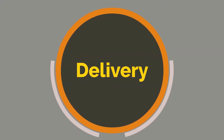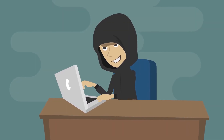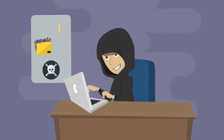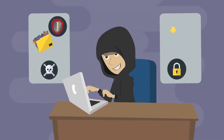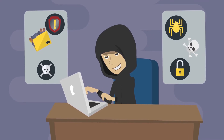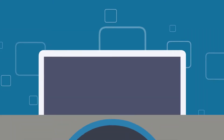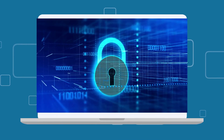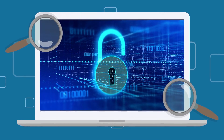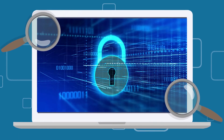Step 3 - Delivery: Now the hacker has everything they need to attack. They may send phishing emails, develop an infected website, or wait for someone to open an infected document. Step 4 - Exploitation: In this step, the hacker uses the data retrieved against web-based email systems or VPN connections and explores the network.